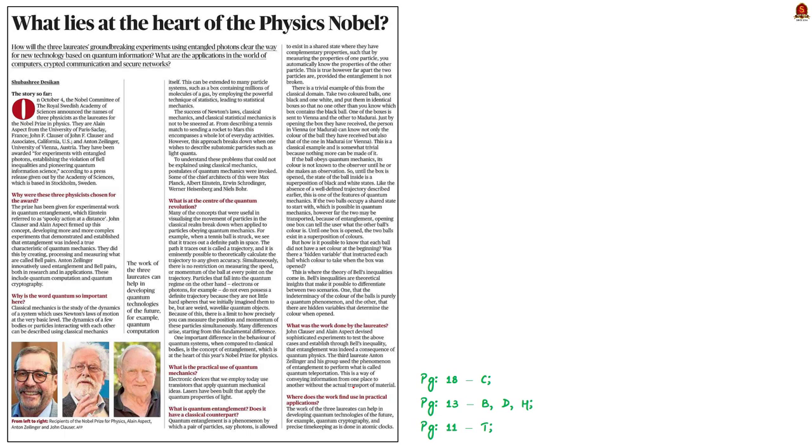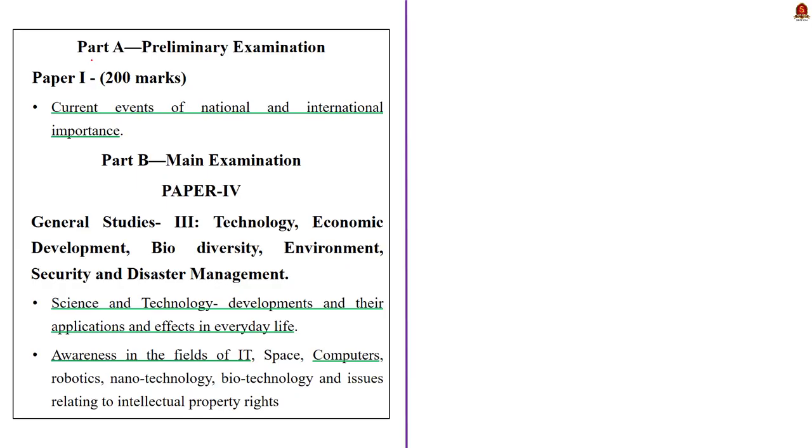Next, we are going to take this FAQ article for our discussion. This is about the Nobel Prize for Physics. Nobel Committee of the Royal Swedish Academy of Sciences announced the names of three physicists as the laureates. They are Alain Aspect, Anton Zeilinger and John Clauser. They are awarded the Nobel Prize for experimental work in quantum entanglement. In this context, let us understand quantum computing and other important facts related to it. The syllabus relevant to this article is highlighted here for your reference.